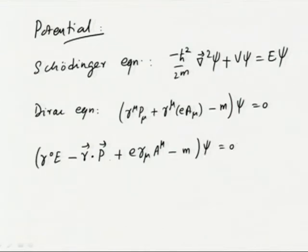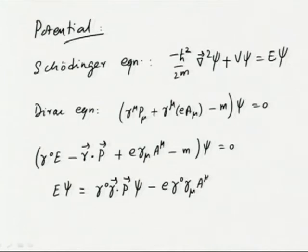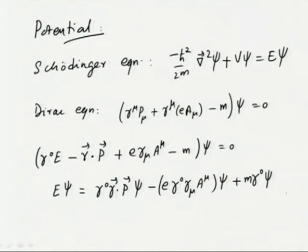I will take E to one side to compare with the Schrödinger equation. Multiplying by γ⁰ gives E ψ equal to γ⁰ γ · P ψ minus e γ⁰ γ^μ A_μ ψ plus m γ⁰ ψ. This is the Dirac equation with the interaction term.